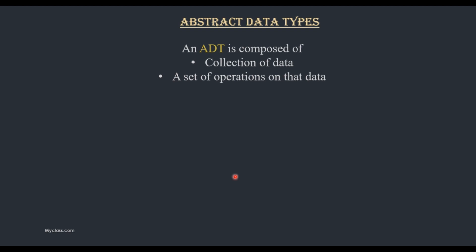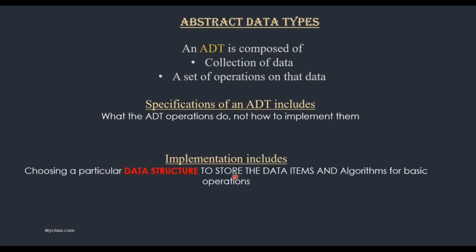The specification of an Abstract Data Type includes what the ADT operations do, not how to implement them. The implementation includes choosing a particular data structure to store the data item and the algorithm for basic operations. That algorithm describes how these basic operations are performed.